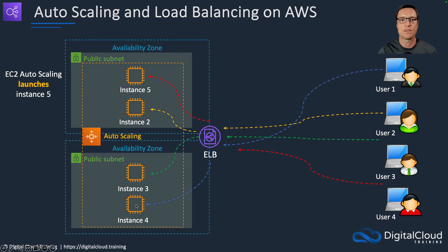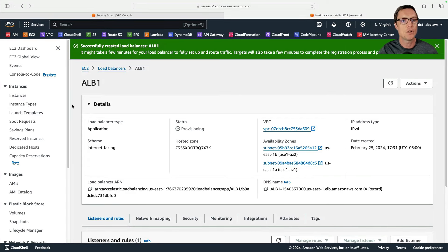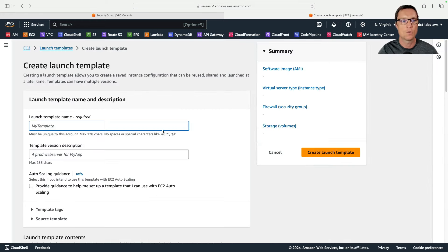We've deployed the load balancer and target group, but we don't have any instances yet, so we need to create the auto scaling group. There are a couple of components needed: a launch template where we specify the Amazon Machine Image and some settings including user data to install a web server, then we create the auto scaling group and attach the target group so that when auto scaling launches instances they're automatically registered to the target group.